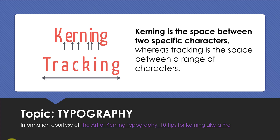You can see in the example that there's far too much space between the K and the E, so the designer has to kern these two letterforms closer together because it looks visually awkward. Whereas in the word 'tracking,' you can see that the space is uniform throughout all of the letterforms. It's a very simple process — you just have to be familiar with the differences between the two.